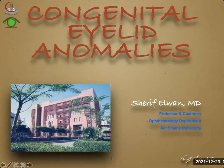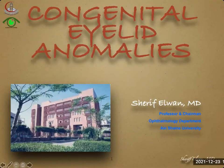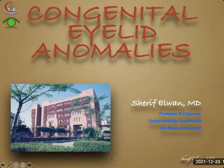This lecture is on congenital eyelid anomalies and it is within the series of lectures on ophthalmic plastic surgery. It includes basic science, biology, and anatomy, and may also be considered part of the pathology course.